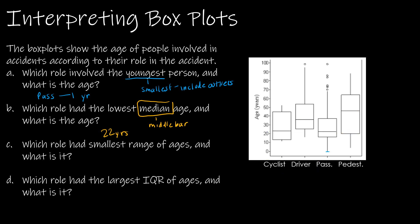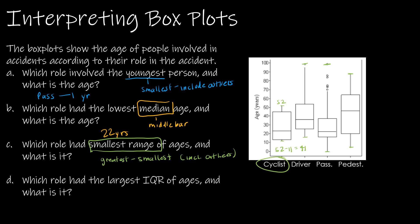Next, we're asked for the smallest range. Remember, range is the greatest value minus the smallest value, and that should include outliers. For cyclist, that looks to be about 52 minus 11, giving us 41. For driver, it's 100 down to about 15, which is much greater than 41. For passenger, we're looking at 100 down to basically one, so about 99 years. For pedestrian, it's about 80-something down to maybe five — again greater than 41. So cyclist had the smallest range at about 41 years, meaning it is the least spread out.